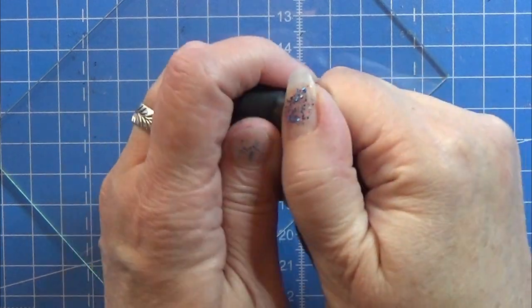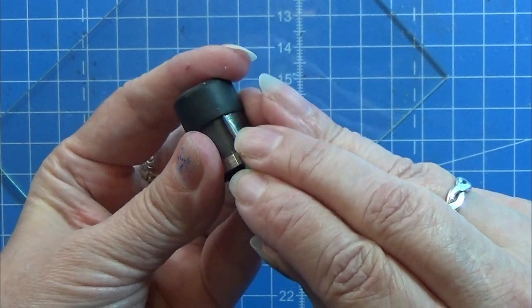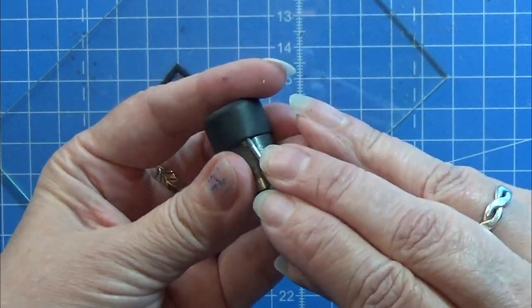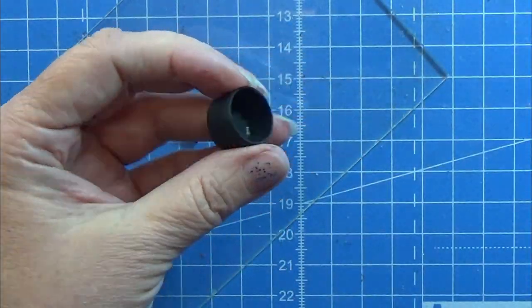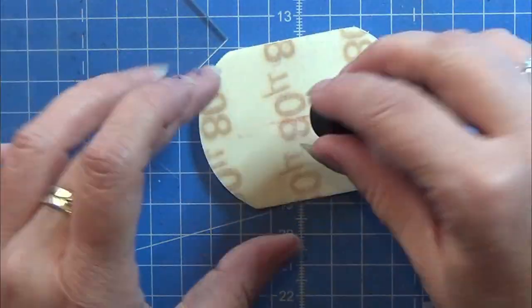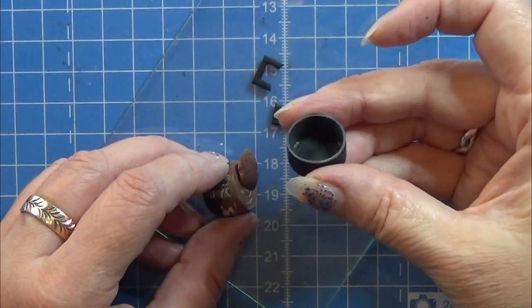After baking and cooling, I am using this needle tool to loosen up my little pot around this hole puncher and just slide it off. Here I have the pot and the handles, and I'm just going to sand the top of this little pot.